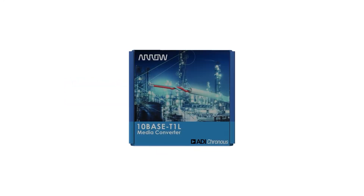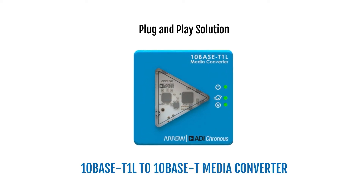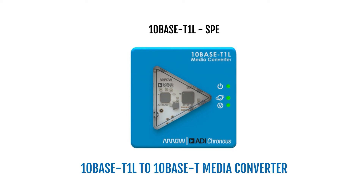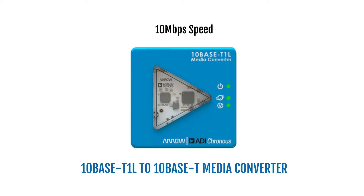The Media Converter 10Base T1LMC is a plug-and-play solution which enables seamlessly interfacing from a single twisted pair SPE 10Base T1L to standard 10Base T Ethernet. The converter is built using industrial PHY technology from Analog Devices: the ADIN1100 10Base T1L PHY and the ADIN1200 10Base T PHY. This device is pre-programmed to configure both PHYs in 10Mbps full duplex auto-negotiation mode.